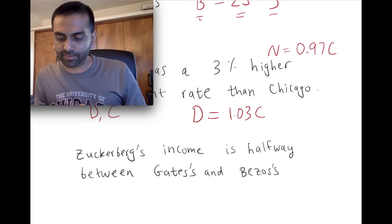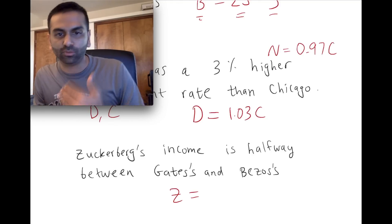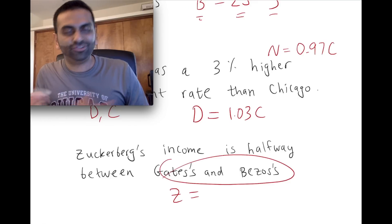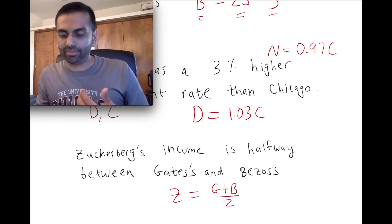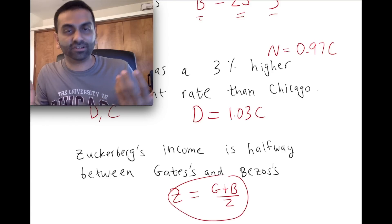going to say Zuckerberg's income is—so z equals what is it? Well, halfway between g and b, so just average them. So literally g plus b divided by two. So that is literally the translation of that.